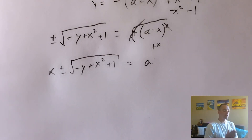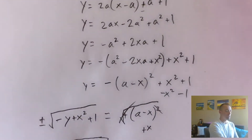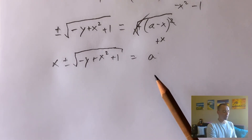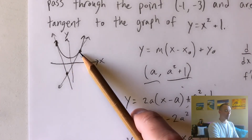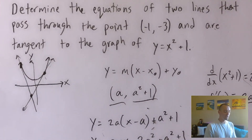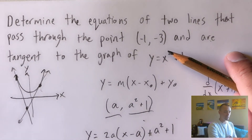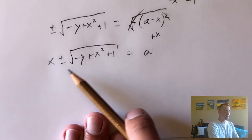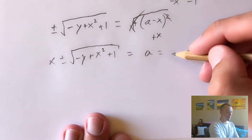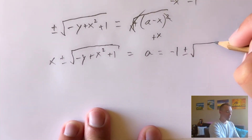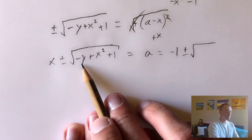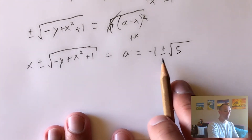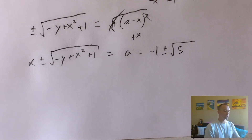The other important piece of information is that this tangent line also has to go through the point negative one, negative three. To figure out what A value makes this work, we plug in negative one for x and negative three for y. That gives us A equals negative one plus or minus the square root of three plus one plus one, which is five. So A can be either negative one plus root five, or negative one minus root five — that's where the two different tangent line equations come from.